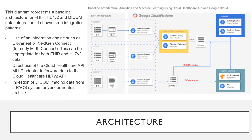This diagram represents a baseline architecture for FHIR, Health Level 7 version 2, and DICOM data integration. It shows three integration patterns: use of an integration engine such as Coverleaf or NextGen Connect, which can be appropriate for both FHIR and Health Level 7 version 2 data; use of the Cloud Healthcare API MLLP adapter to forward data to the Cloud Healthcare Health Level 7 version 2 API; and injection of DICOM imaging data from a PACS system or vendor-neutral archive. Each type of data goes through three phases: ingestion, cleansing, filtering, transformation, and processing, with details differing depending on the data modality.